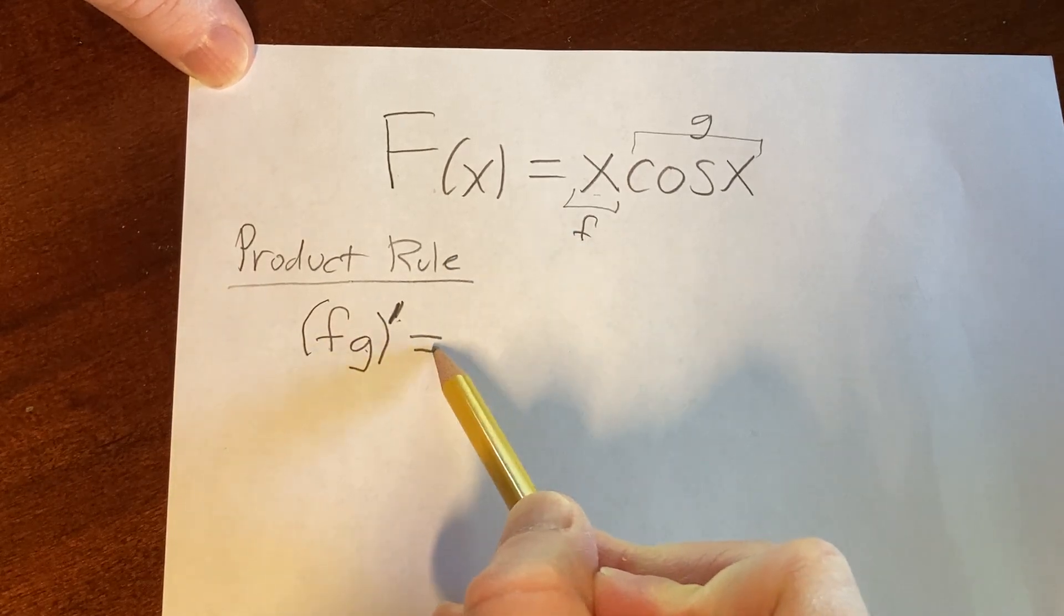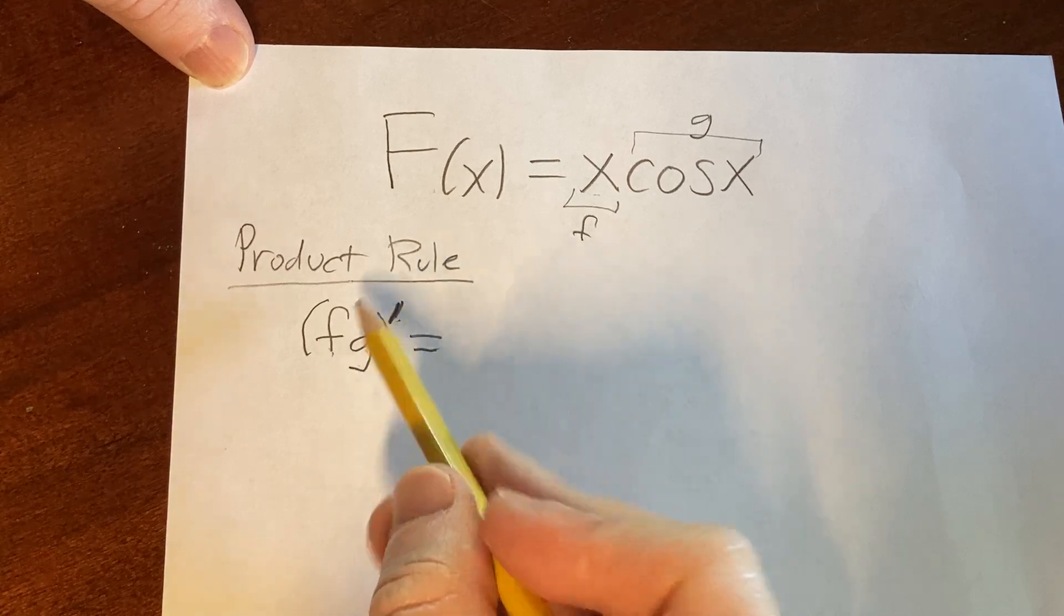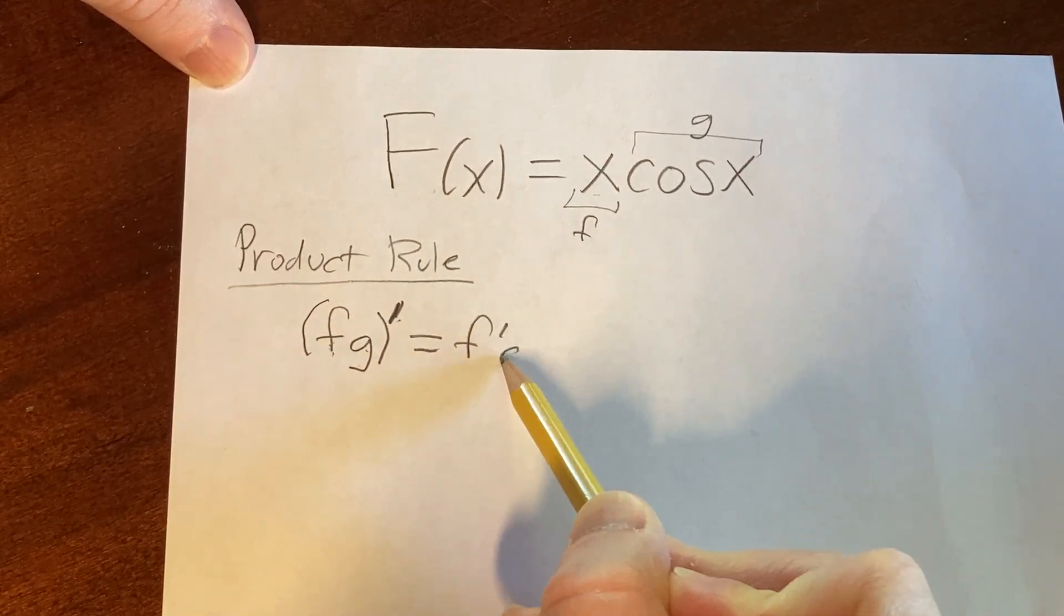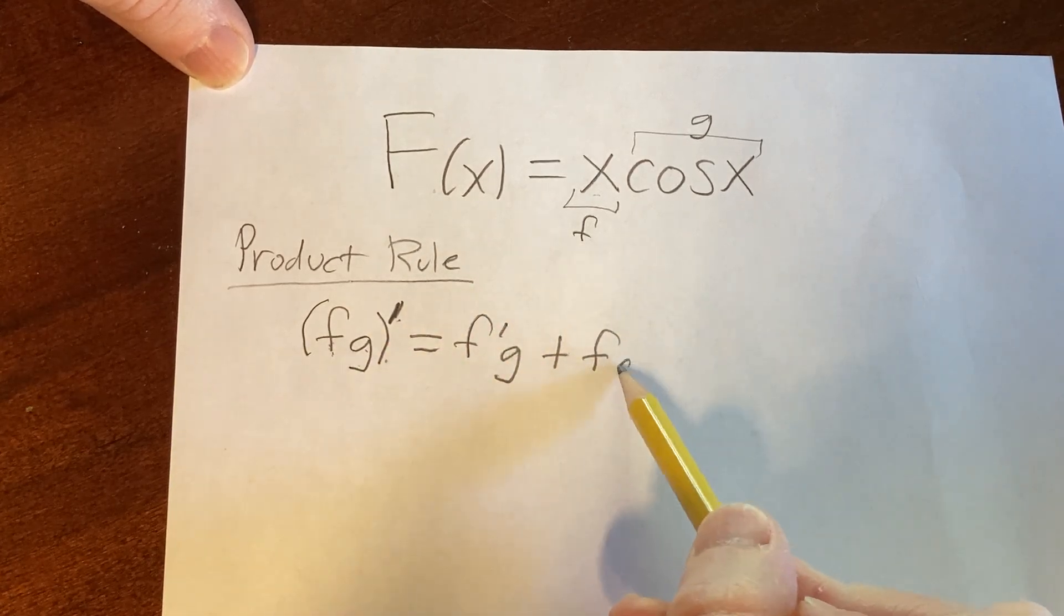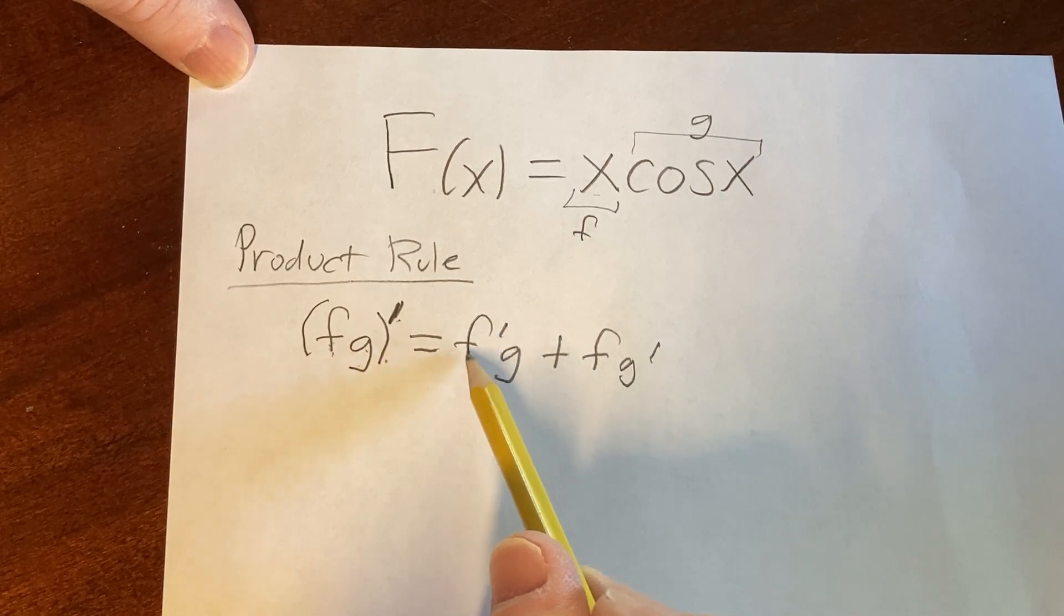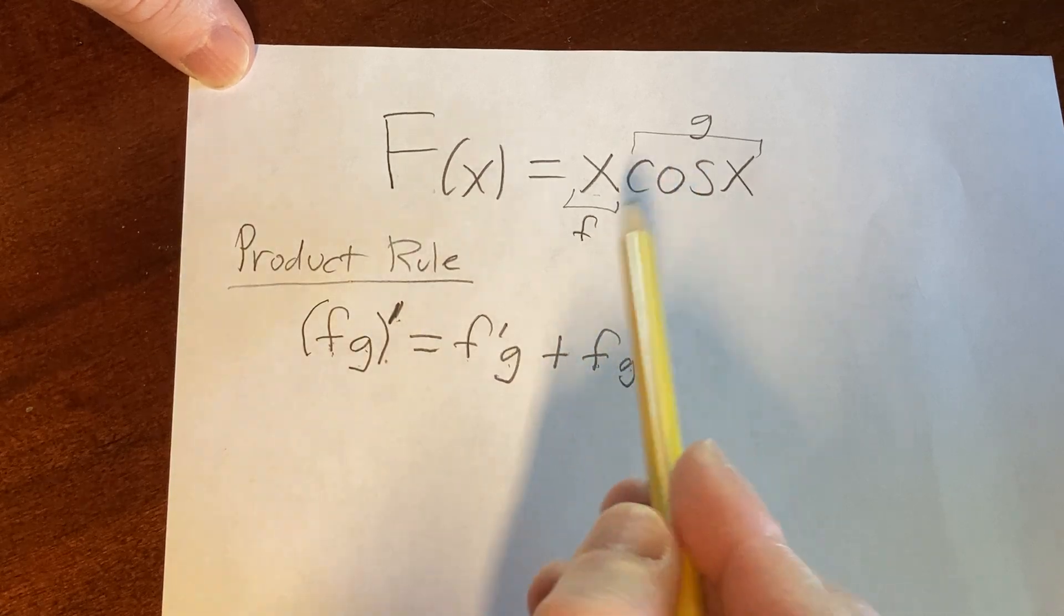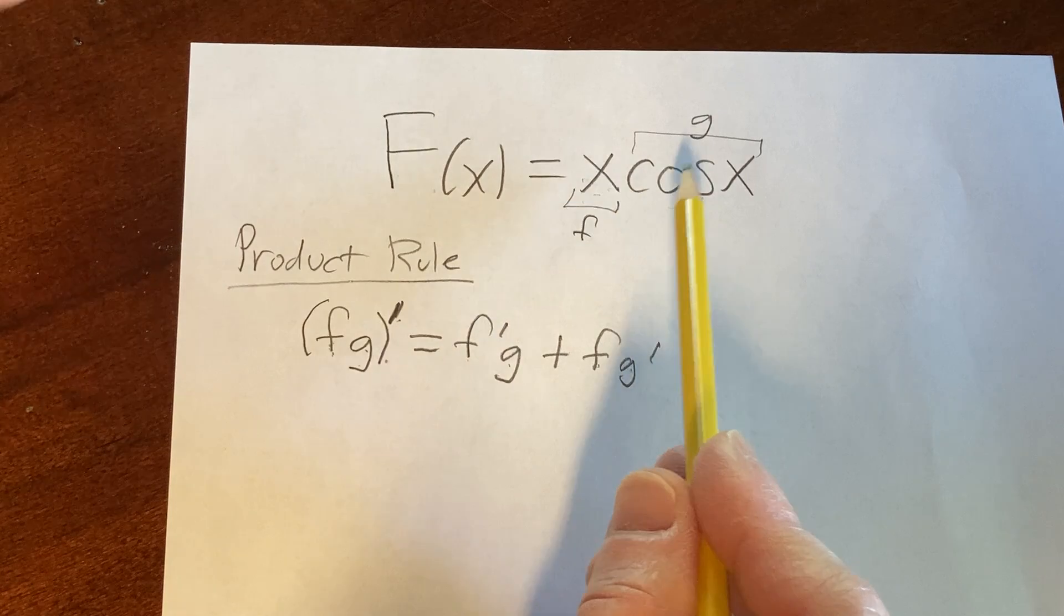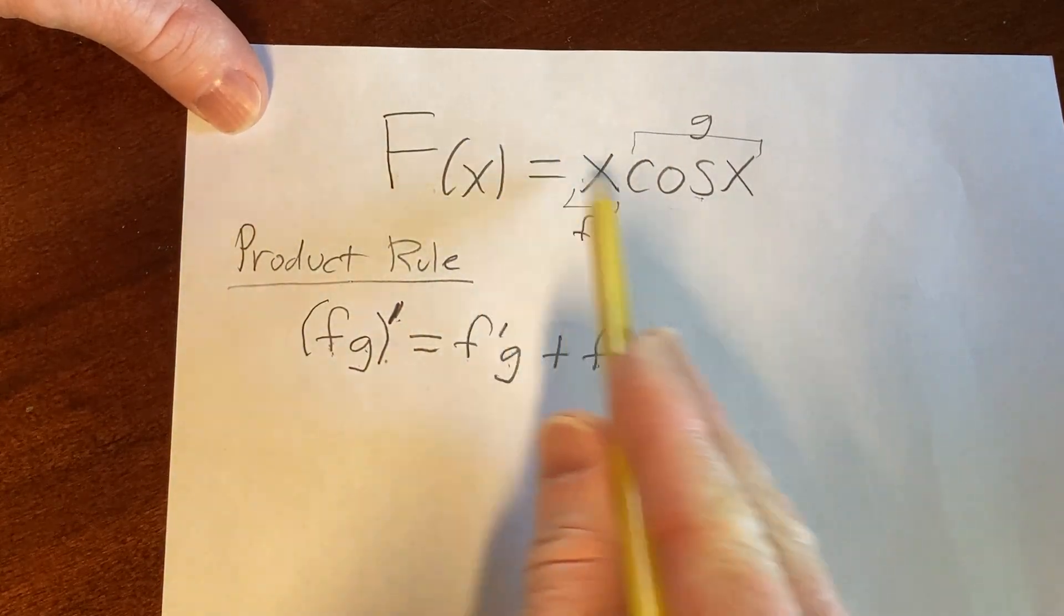The formula says, think of F as your first function and G as your second function. So it's the derivative of the first times the second plus the first times the derivative of the second function. The reason I say the derivative of the first times the second plus the first times the derivative of the second is because in actual problems you don't have F and G, but you do have the first and the second. So it makes it easier to think about. If we apply this formula to our function big F,